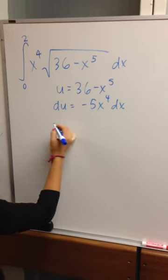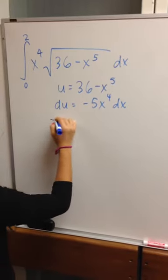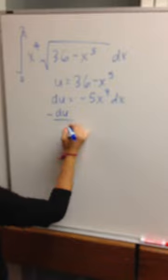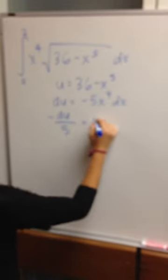You're going to divide du by negative 5, so that's negative du over 5 equals x to the fourth dx.